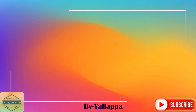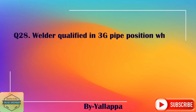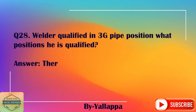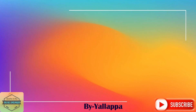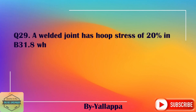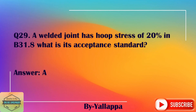Question 28: Welder qualified in 3G pipe position — what positions is he qualified for? Answer: There is no 3G position in pipe welding. Only 1G, 2G, 5G, and 6G. Question 29: A welded joint has hoop stress of 20% in B31.8 — what is its acceptance standard? Answer: API 1104.